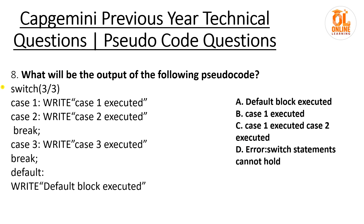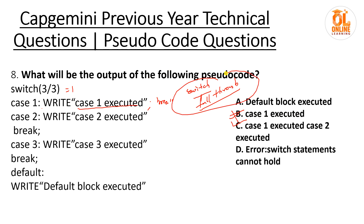Next question: switch(3/3) equals switch(1). Case 1 executes and prints 'case 1 executed.' However, there is no break statement after case 1, so due to switch fall-through, case 2 also executes and prints 'case 2 executed.' Option C is correct. Switch fall-through means when break is omitted, subsequent cases also execute regardless of their condition.